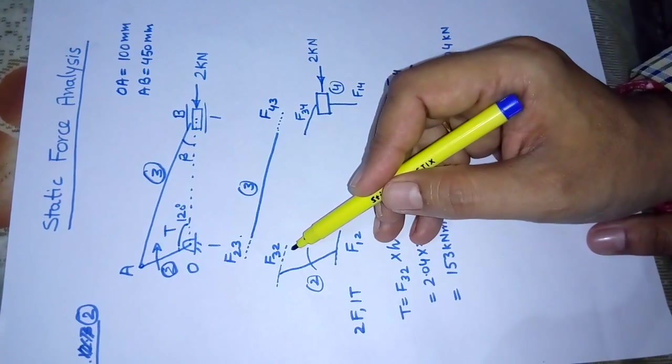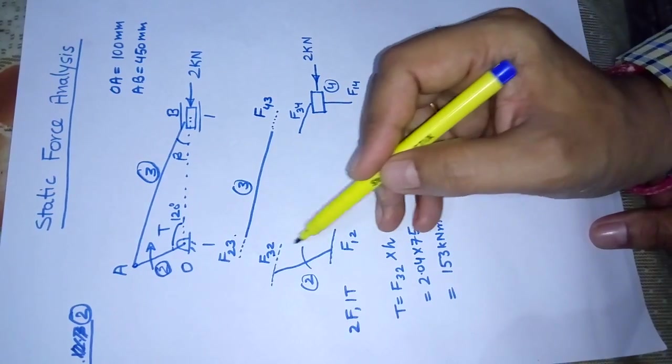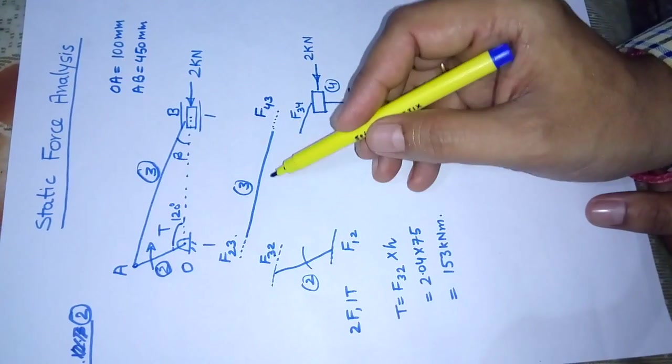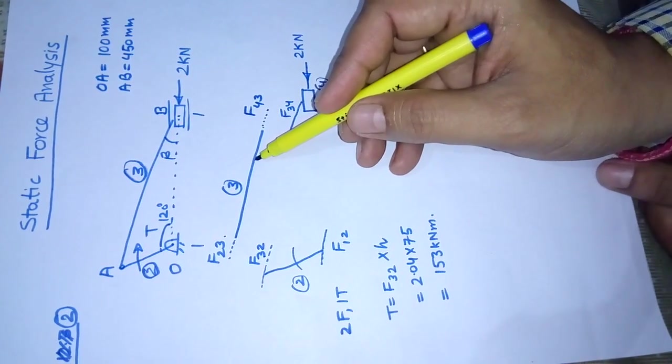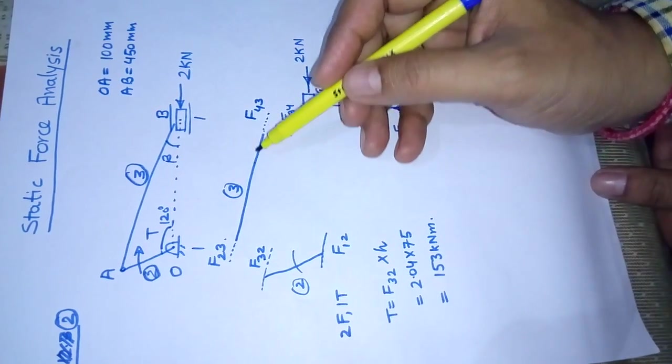F23 is going to be equal and opposite to F32, and F43 is going to be equal and opposite to F34. But we do not know their arrowheads—that is, we don't know if member number 3 is under tensile or compressive stage.